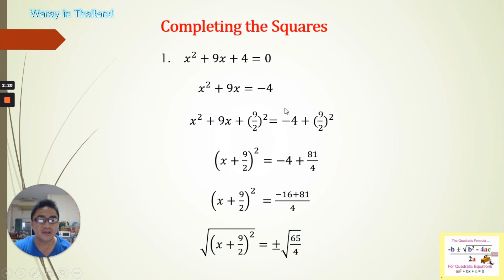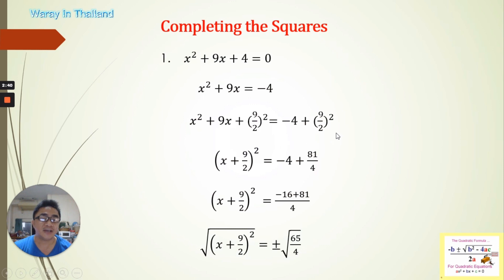This equation is still equal to this equation. This one is a perfect square, so we can write it in this format. This is the value for base A and this is base B. Since that is all positive, we have positive, so it can be written as (x + 9/2)². On the right side, we simplify: 9² is 81 and 2² is 4. We combine by cross-multiplying: 4 times negative 4 is negative 16, plus 81, over 4. Simplifying further, 81 minus 16 is 65, so we have 65 over 4.